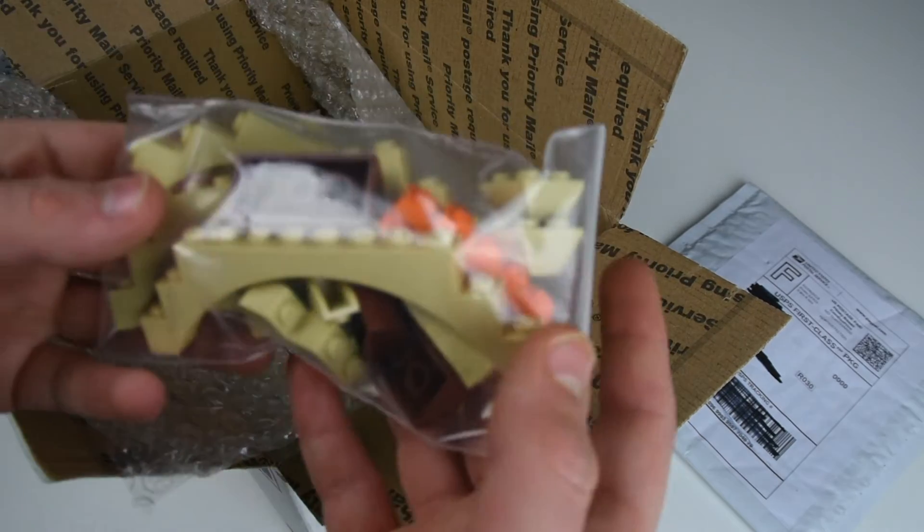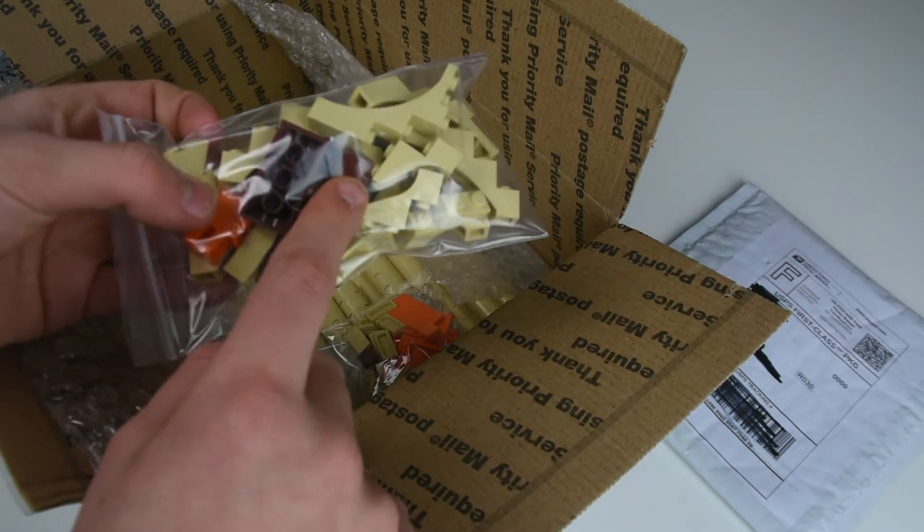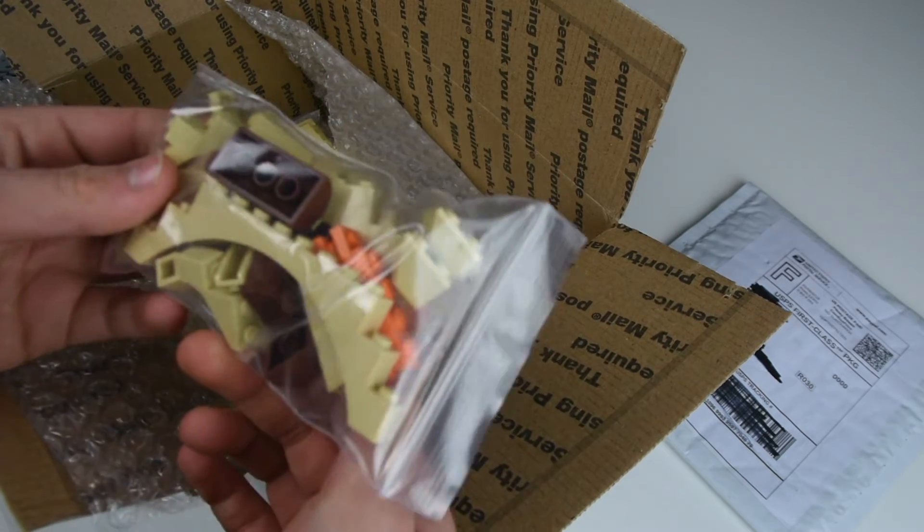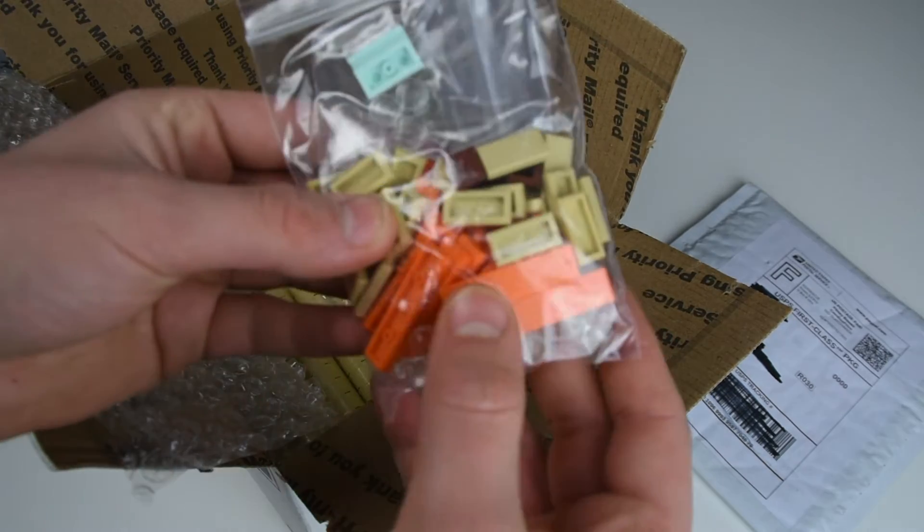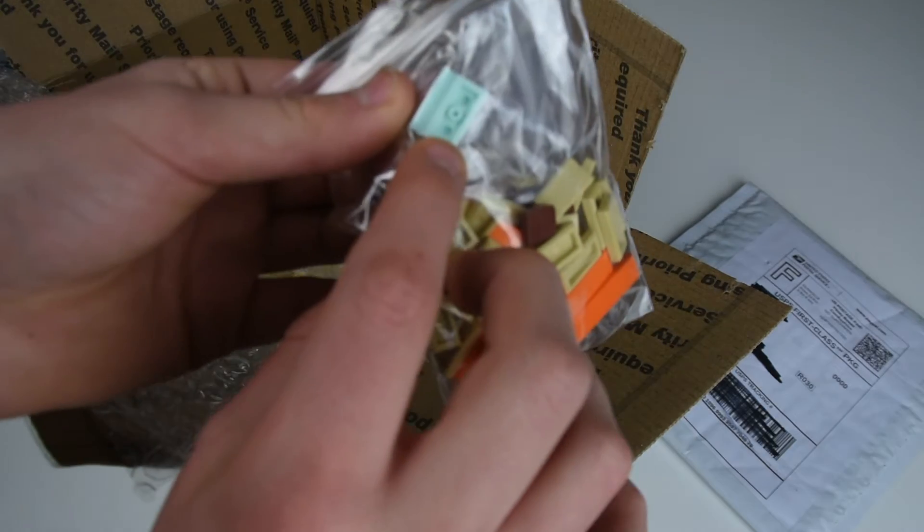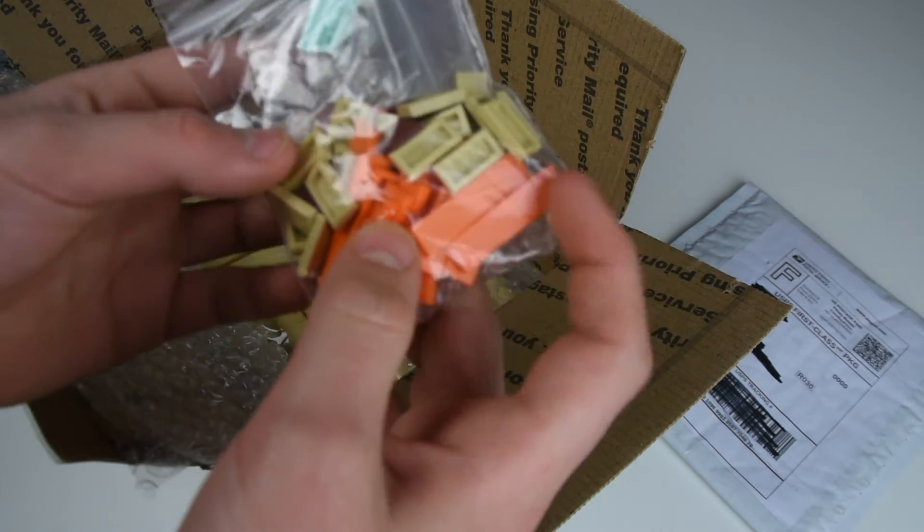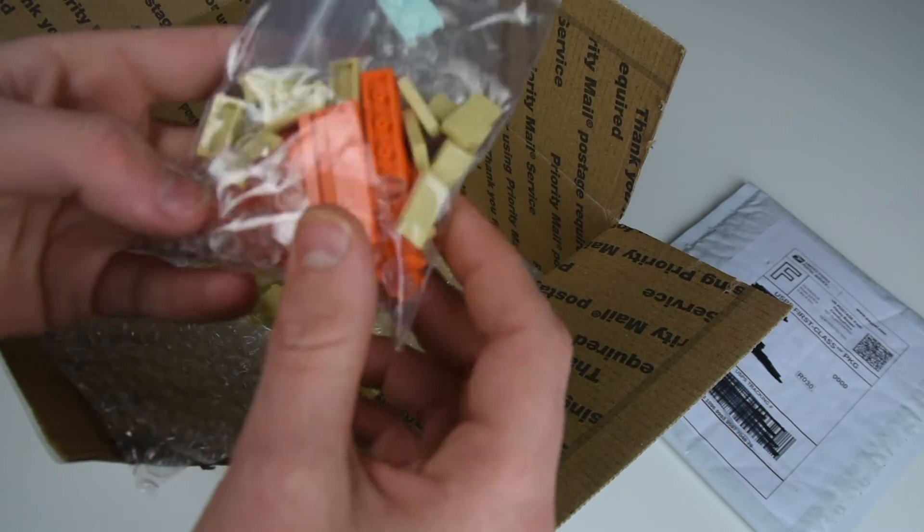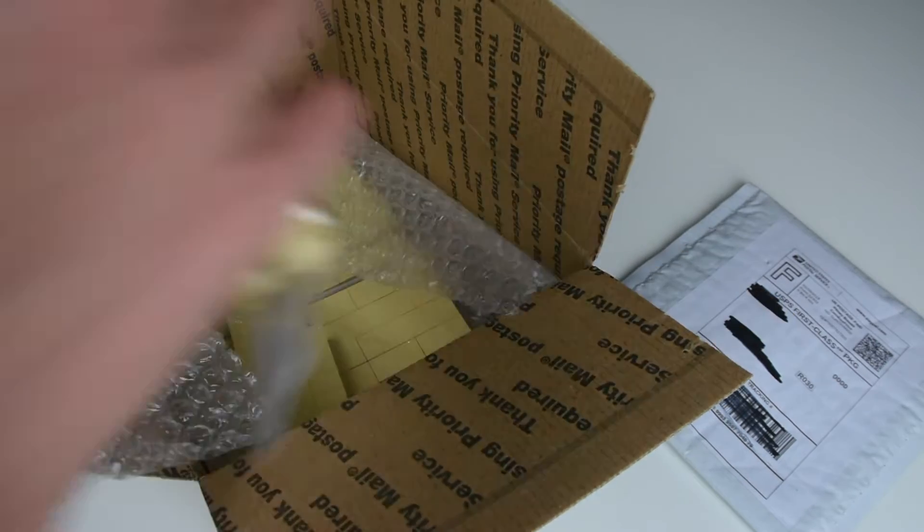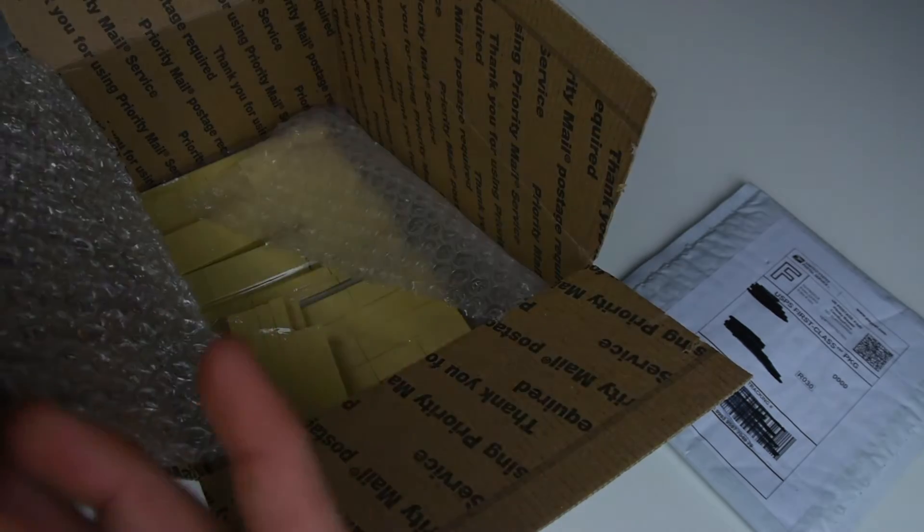We got some tan 2x2 inverted slopes for the roof detailing, slopes for the doorways, and brown pieces for a gun I'm working on. We got more of these orange tiles, some light aqua pieces, clear 1x1 round tiles, tan 1x2s, and orange plates for my cargo shuttle. That video is coming out soon.